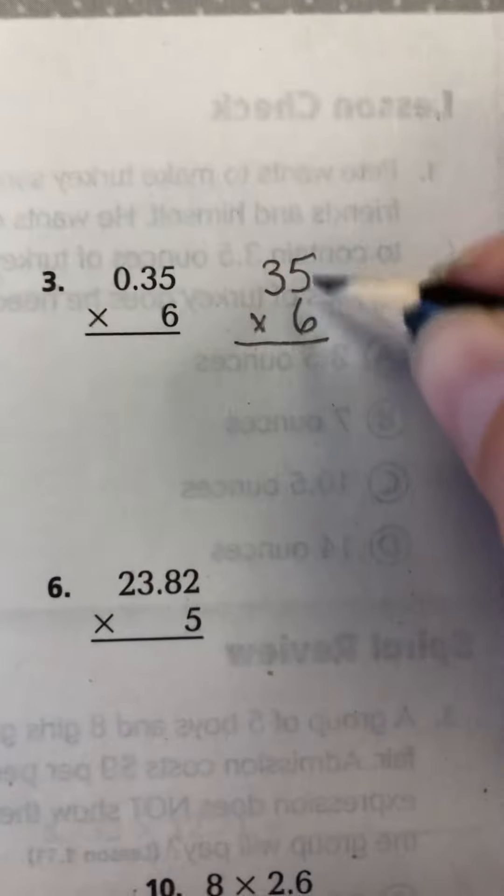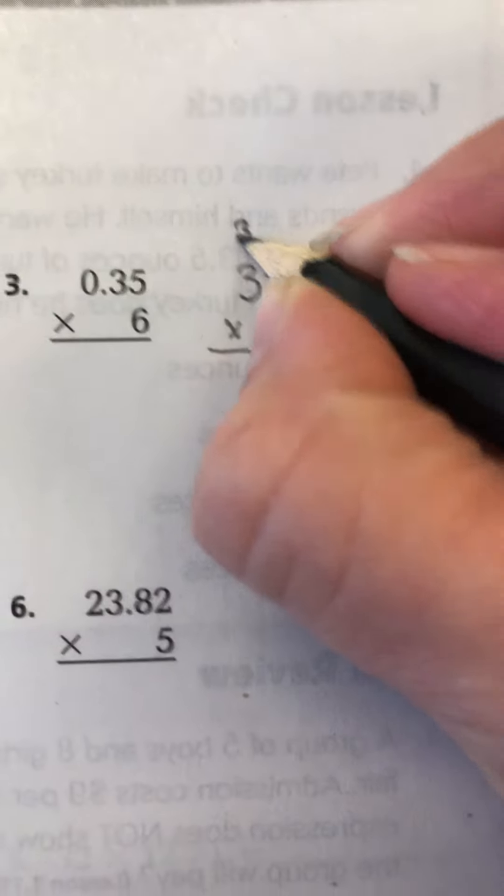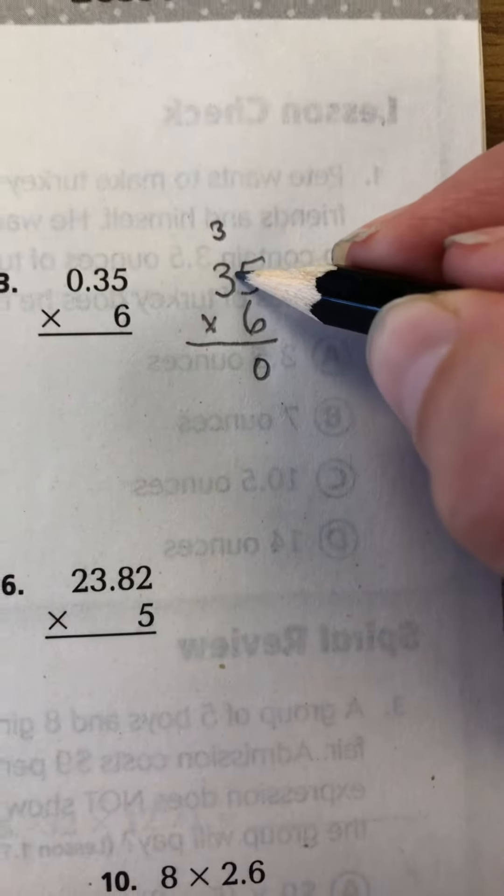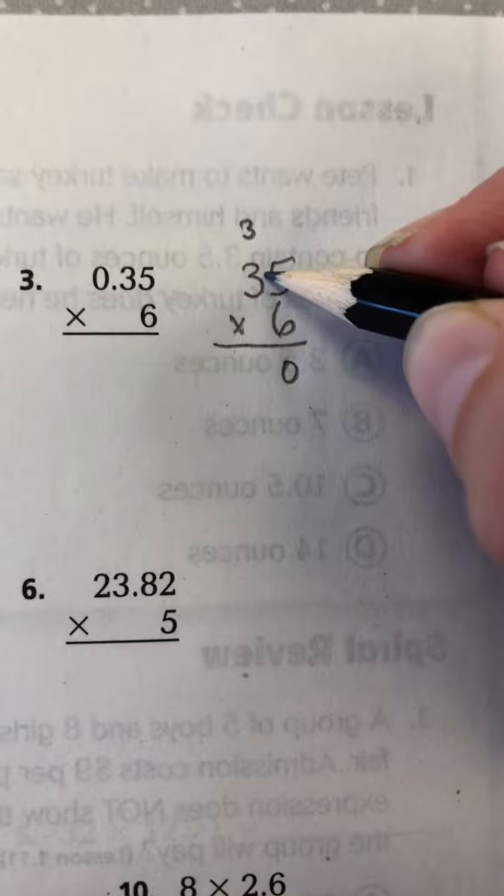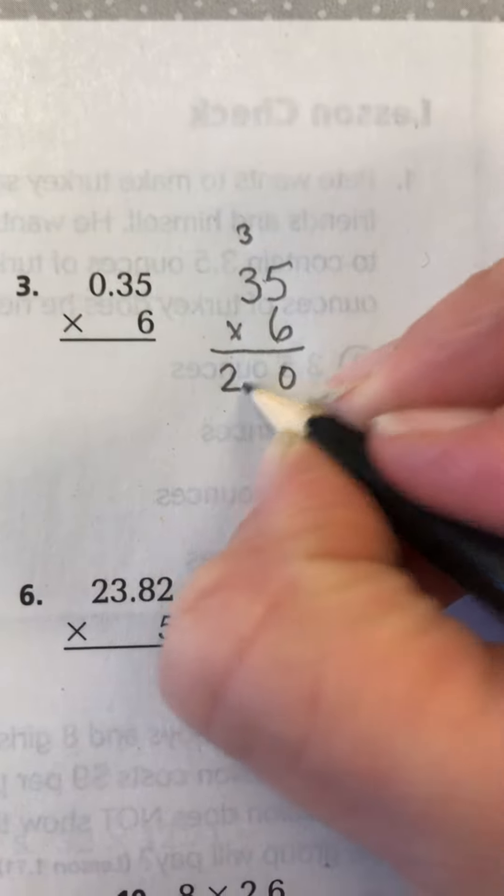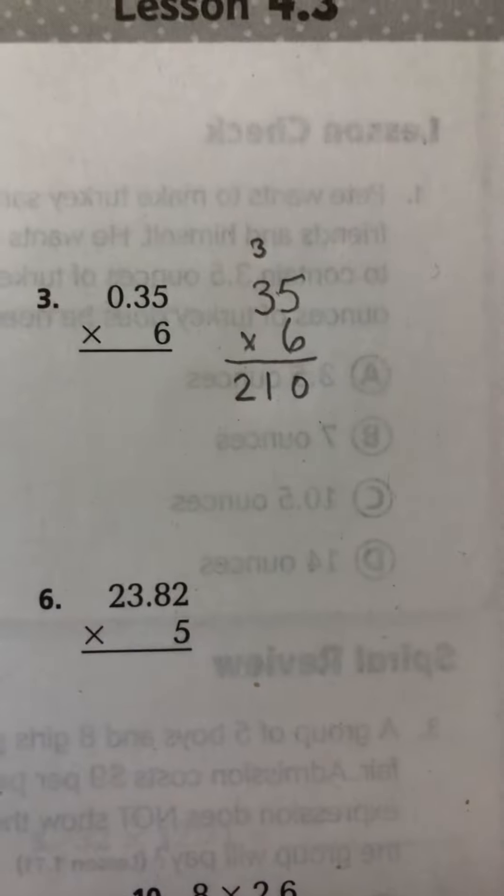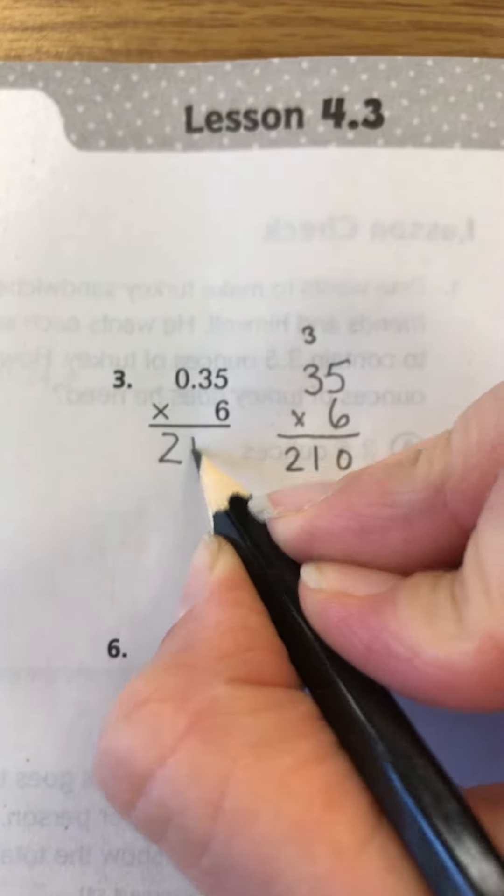So here we go. 6 times 5 is 30. 6 times 3 is 18. Plus 3 more is 21. And that gives me 210. So I know my answer over here is going to have the same numbers, 210.